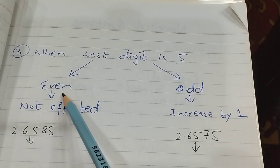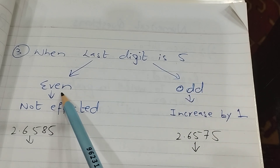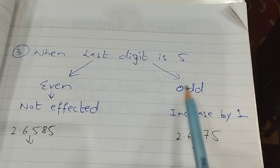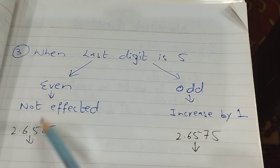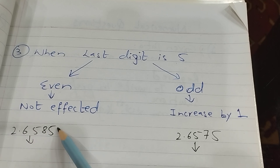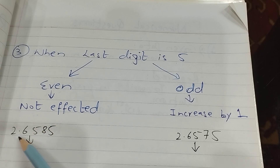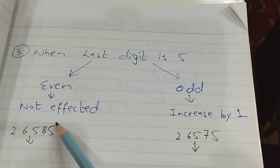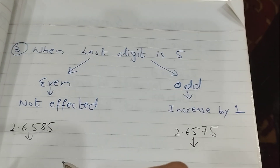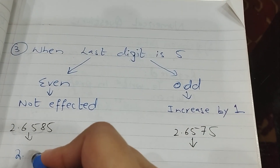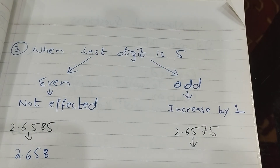अगर last digit five है और उसके साथ वाला number even हो तो क्या होगा? जैसे number है 2.6585 — last digit five है और उसके साथ वाला number eight है, जो कि even है। तो यहाँ पर मैंने लिखा है: not affected — यह वाला number as it is रहेगा, कोई effect नहीं आएगा। बस five को drop कर लेंगे। तो 2.6585 से बन जाएगा 2.658।